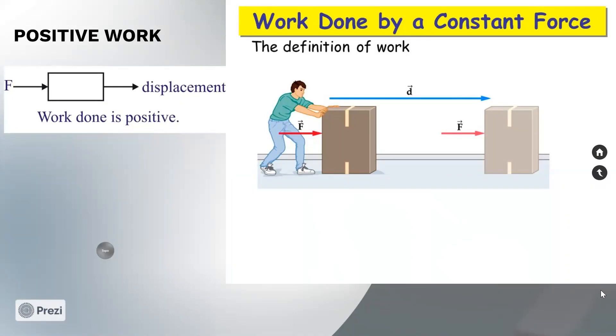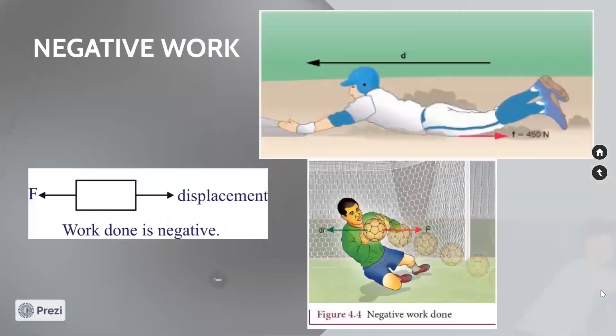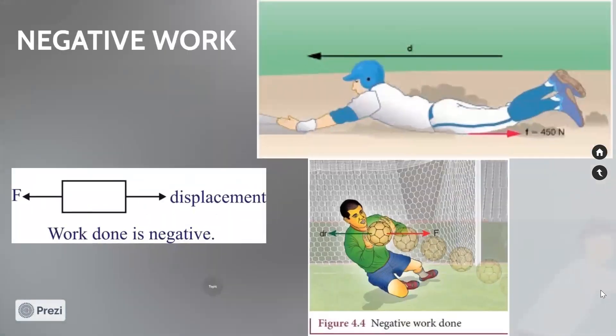If the direction of force and displacement are along the same line, we say it is positive work. Negative work, on the other hand, represents the work when the force and displacement are in the opposite direction. When force and displacement are in the opposite direction, we say it is negative work.